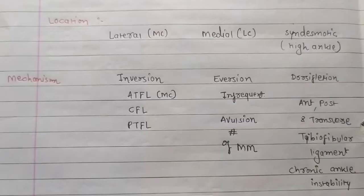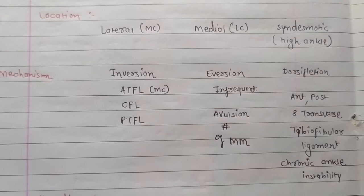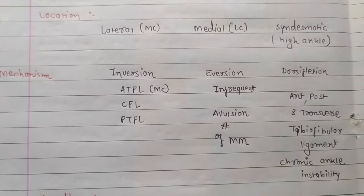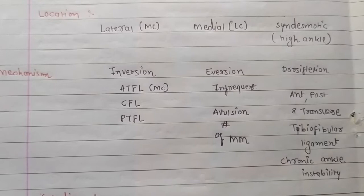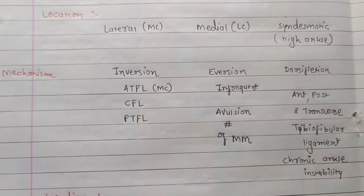Classification of ankle sprain by location: lateral sprain, medial sprain, and syndesmotic sprain. Syndesmotic sprains are also known as high ankle sprains. The mechanism of injury in lateral sprain involves excessive inversion of a plantar-flexed foot.